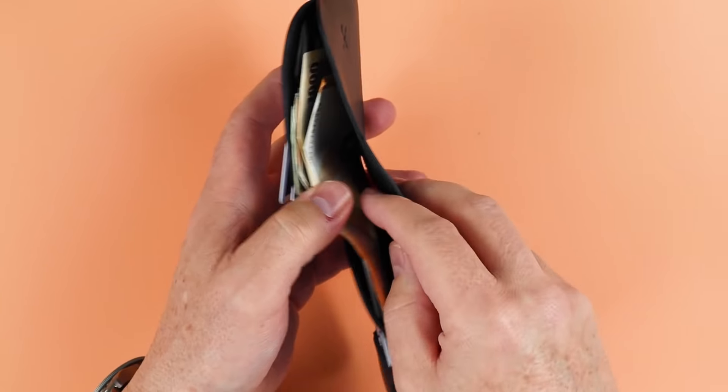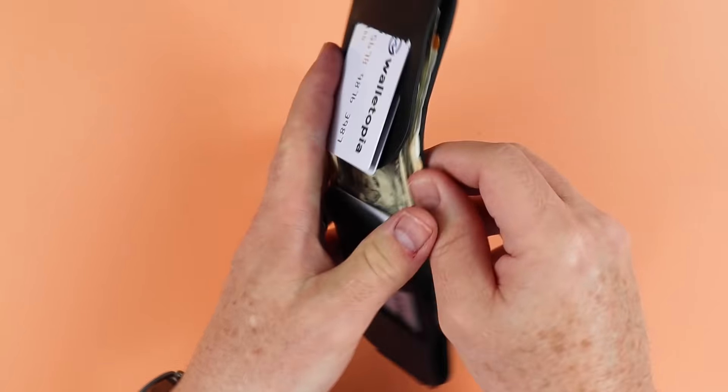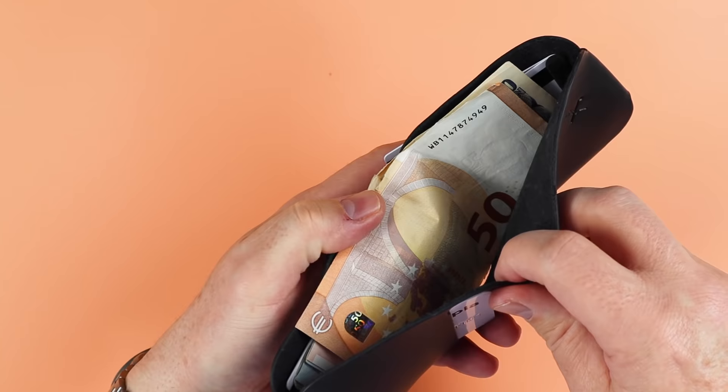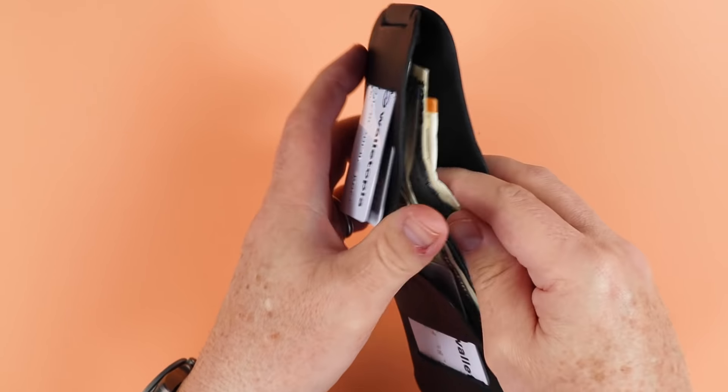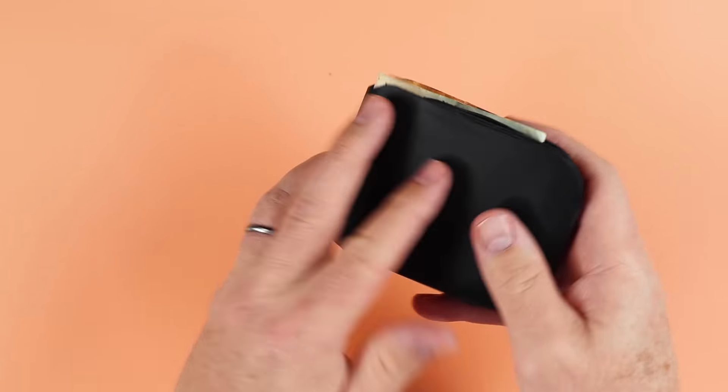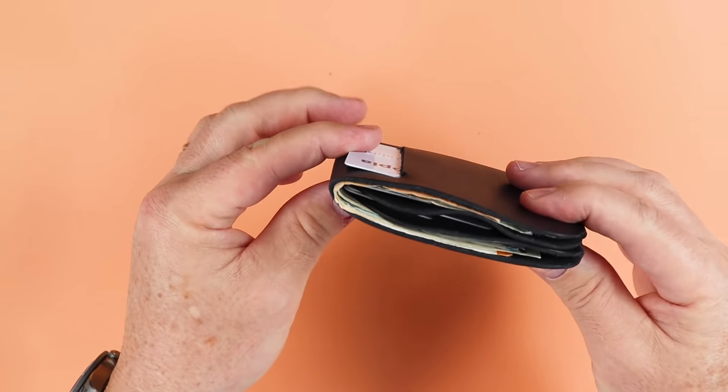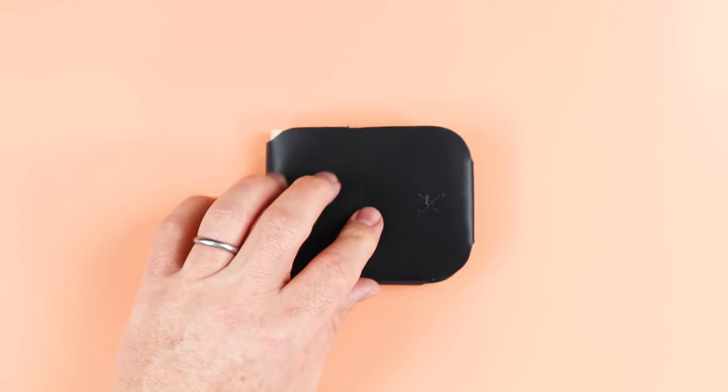And kind of to my surprise, the taller currencies, the yen and the euro here in the back, or here in the front. There they are. They did just fine too. I mean, they peak out just a little bit at the top, but you know what, it's very doable.